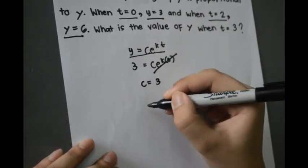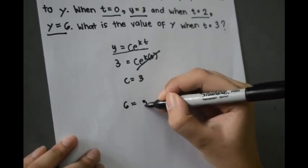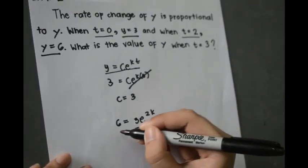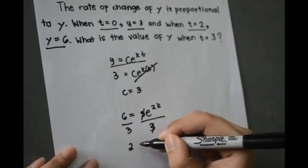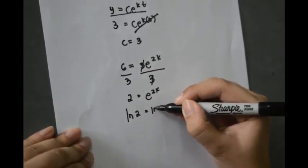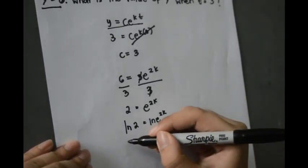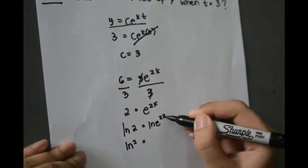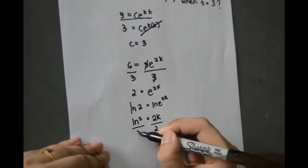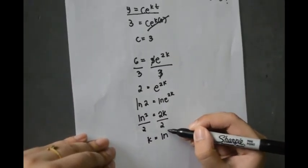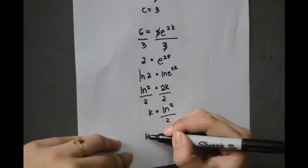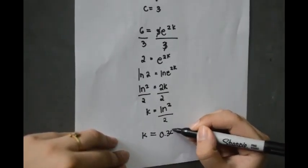Using the second initial condition, 6 equals 3 times e raised to 2k. To solve for e, we divide by 3, then take ln of both sides and bring down the 2k. Dividing by 2 to isolate k, we get k equals 0.3466.